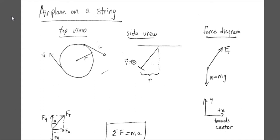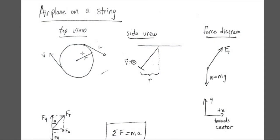The first example we'll look at I call 'airplane on a string.' It doesn't have to be a toy airplane — it could be a rock, a weight, anything that's hanging from a string. We set the string and the object into circular motion. Looking at it from above, this would be the object as it travels in a circle of radius R and with tangential velocity V. Looking at it from the side, the radius would be here, and this notation indicates it is traveling into the page on the left side, meaning it would be traveling out of the page on the right side.